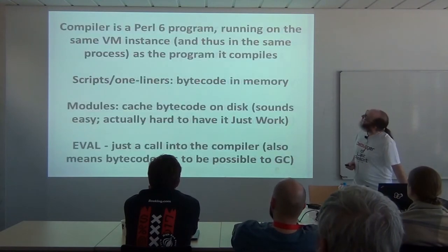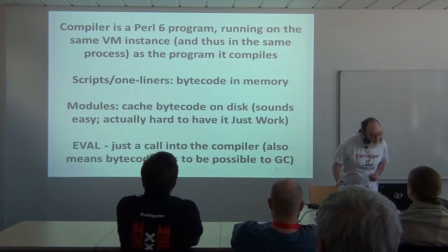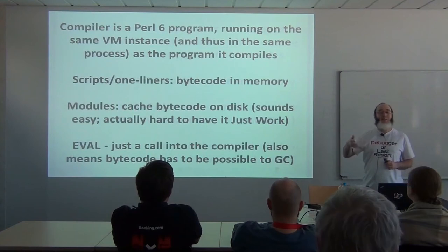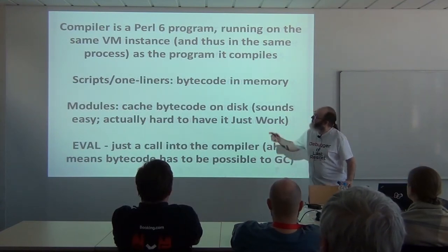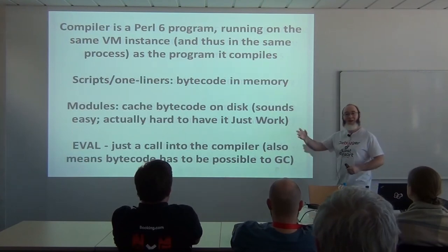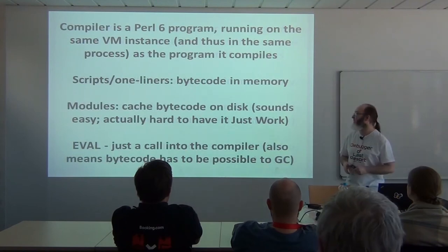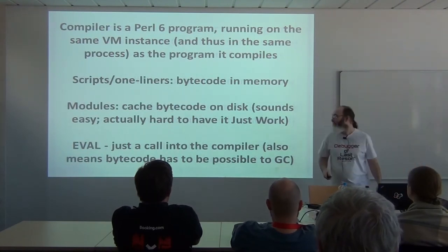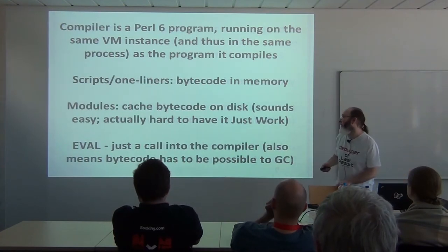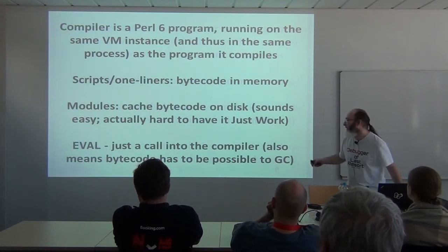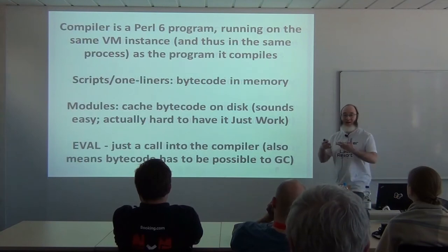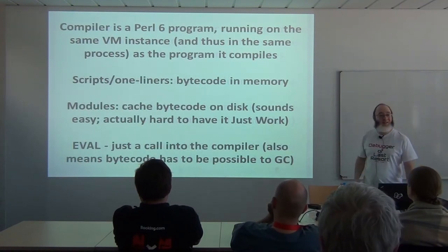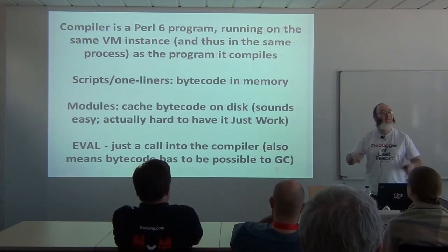One interesting thing about this architecture is that the compiler itself is just a Perl 6 program — it runs on top of the VM the same as your program does. For scripts and one-liners, the compiler runs in memory, produces the code, and we run it without ever writing to disk. For modules we cache the bytecode on disk, which turns out to be really hard to engineer well. And `eval` is actually pretty easy in Perl 6 because the compiler is just more Perl 6 code — `eval` just calls that code and runs what it produces, though it does put constraints on us like requiring code to be garbage-collectible after evaluation.